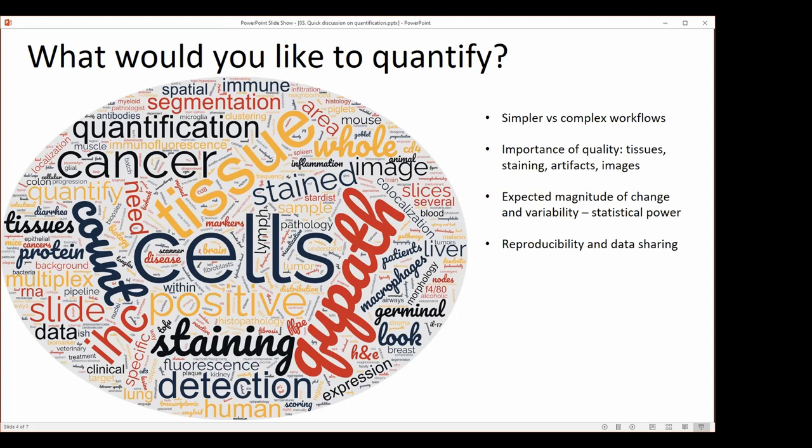One of the questions we often get asked is how many tissues, how many blocks, how many animals we need to image to achieve a statistically significant result. Without knowing the expected magnitude of change in variability, we cannot really calculate statistical power. We recommend running a small preliminary study to establish those parameters, and during that preliminary study we can also identify some problems with tissues, staining, or imaging, and improve them for the next round of a more complete study.